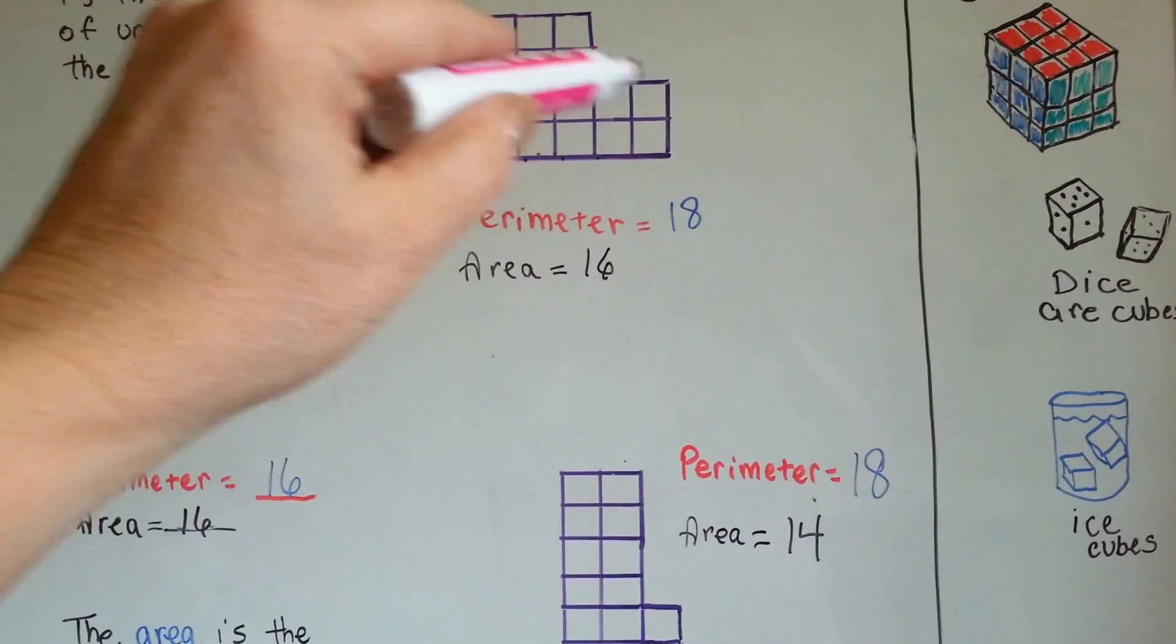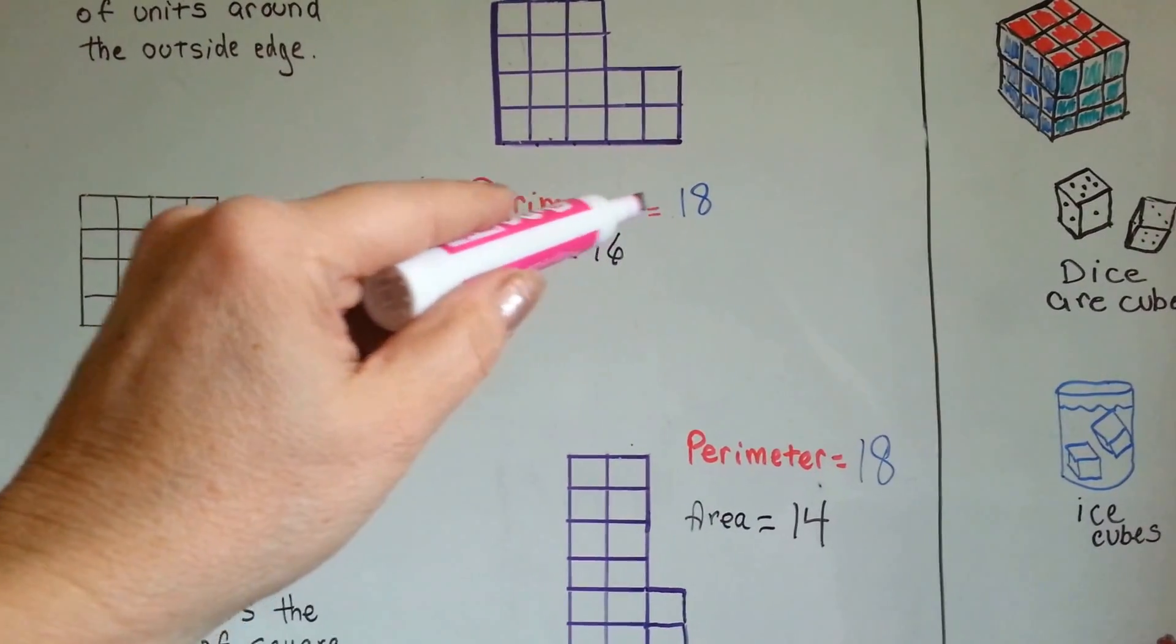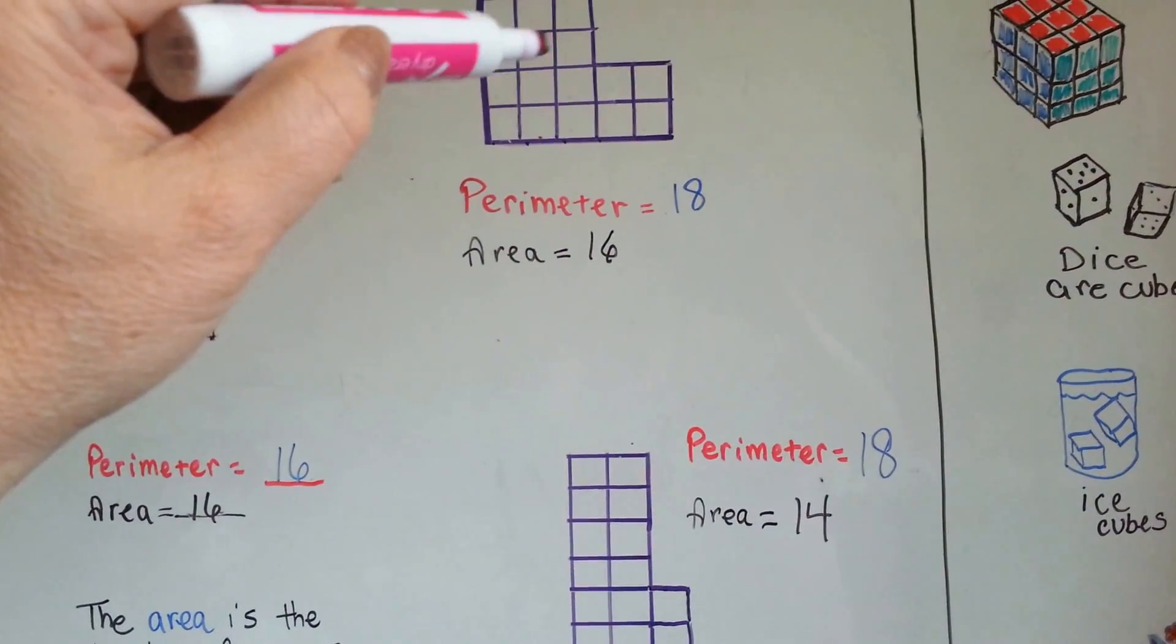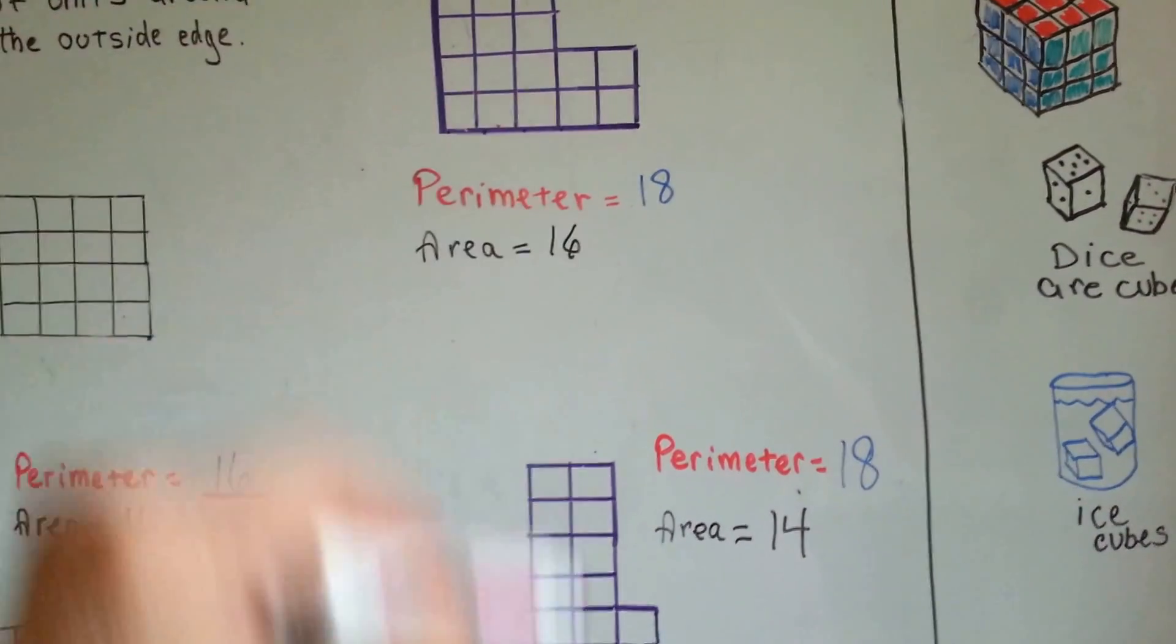So the linear units, the line units going around the outside of the perimeter is 18 units. The area is 1, 2, 3, 4, 5, 6, 7, 8, 9, 10, 11, 12, 13, 14, 15, 16.